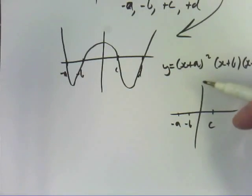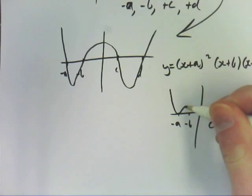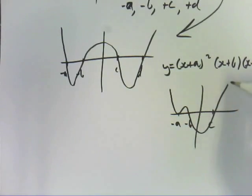It's got the same basic graph. It's still a positive, so it should be the same basic graph. So it's going to come down, touch at a, go down through b, and then back up through c.